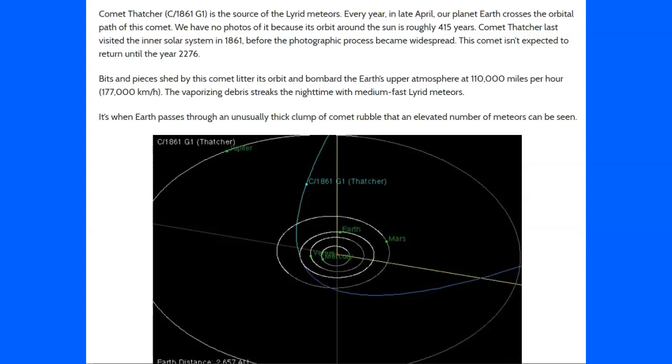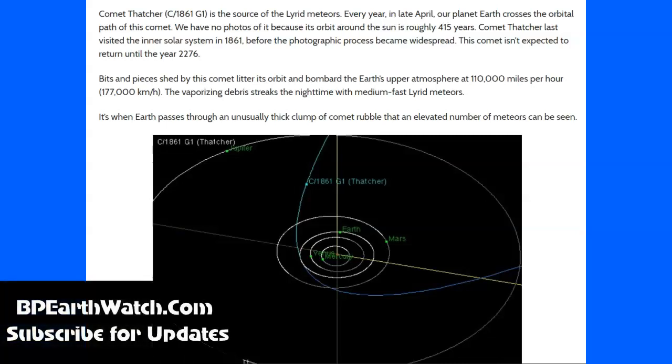Just think about how close it will come to our planet. Bits and pieces shed by this comet litter its orbit and bombard the Earth's upper atmosphere at 110,000 miles per hour, or 177,000 kilometers an hour. The vaporizing debris streaks the nighttime with medium-fast meteors. It's when Earth passes through an unusually thick clump of comet rubble that an elevated number of meteors can be seen.